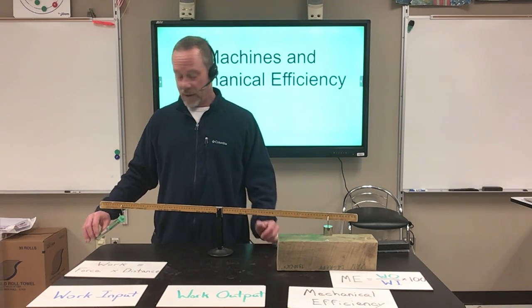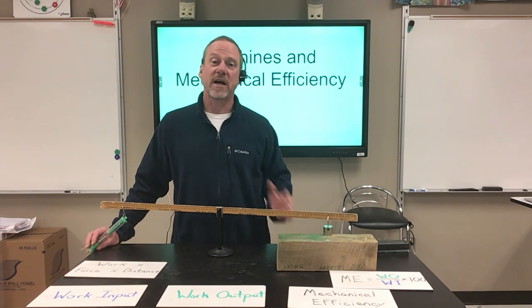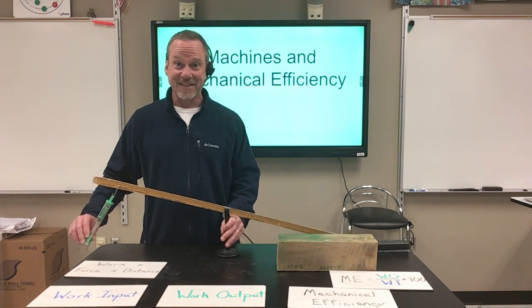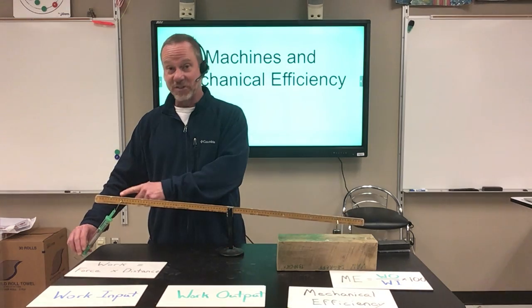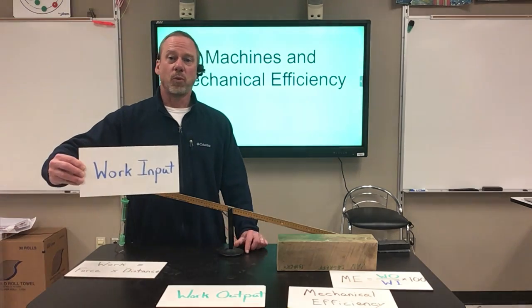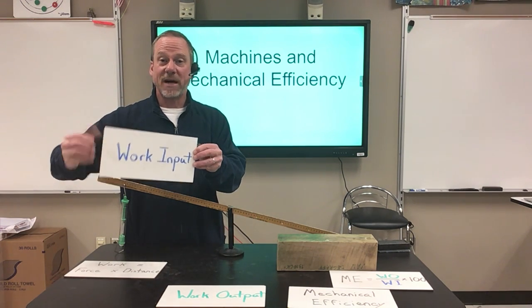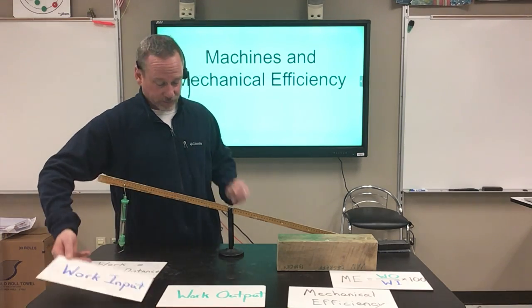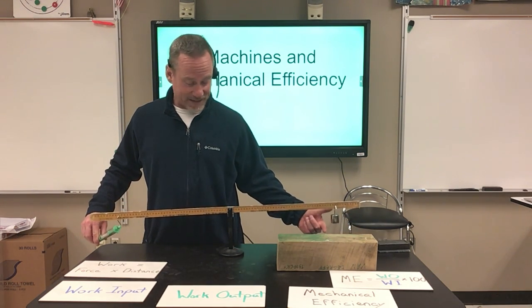Now things just got more complicated, because instead of work just being done once, work was actually done in two places. I did work to the machine — I applied a force over a distance here — and we call that the work input. That was done to the machine. So my force and distance that I apply on this side of the lever is called the work input. The lever then applies a force over a distance on the other side.